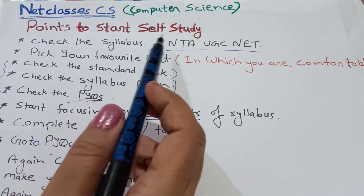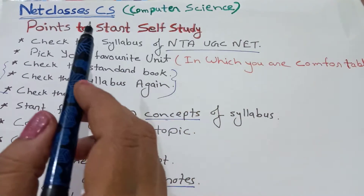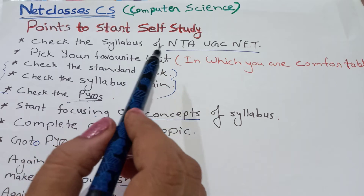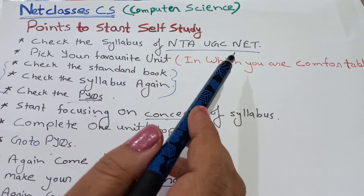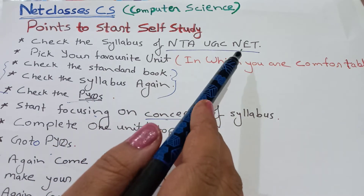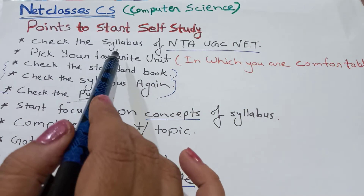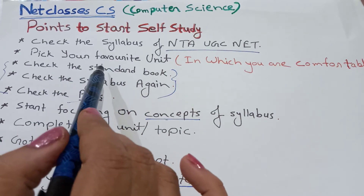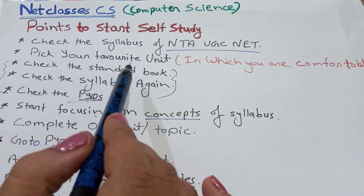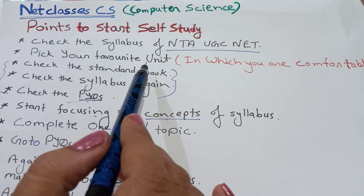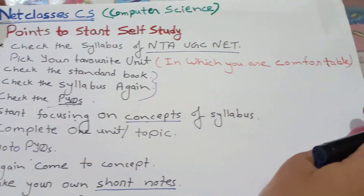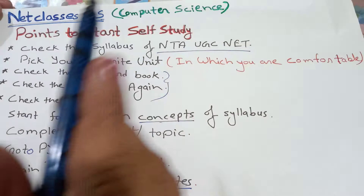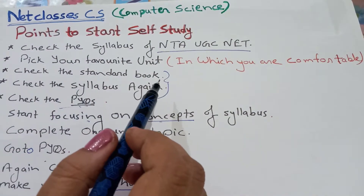Point to start self-study — aap apna self-study kaise start karenge? Sabse pahle aapko NTA UGC NET ke website par jakar wahan se apne subject ka syllabus download karna hai. Uske baad aapko apna favorite unit — jis unit mein aap comfortable hain — use pick kijiye. Check the standard book.